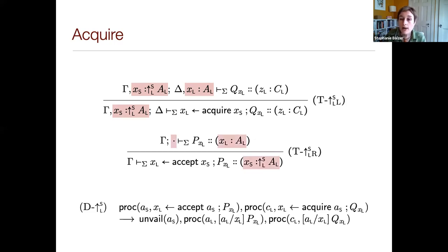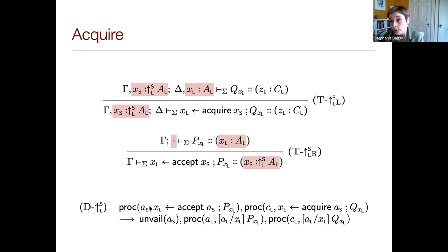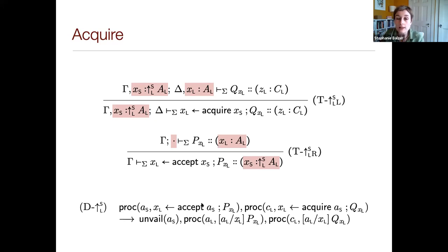For the right rule: the provider is a shared process offering a session of type up-arrow A-sub-L. It's willing to accept an acquire request along its offering channel X-sub-S. If successful, it continues as a linear process offering along a new linear channel X-sub-L a session of type A-sub-L. In the dynamics: we have a shared process offering along channel A-sub-S; every channel comes at one of two modes, L or S. Once acquired, the process continues at the linear mode of channel A. The client tries to acquire A-sub-S and, if successful, binds it to X-sub-L and continues with Q. After the transition, we substitute the linear mode of A in the continuation of P for X-sub-L, creating a predicate 'unavailable A-sub-S' to maintain an invariant in the preservation proof.